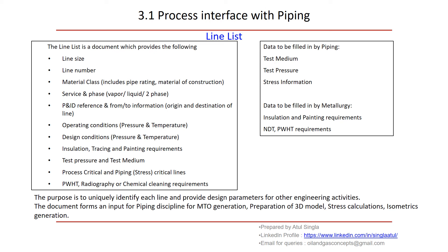Although the line list is a process document, some information is received from other disciplines. For example, test medium, test pressure, and stress information are given by piping, and process fills this into the line list. Data on installation, painting, PWHT requirements, and metallurgy-related items are given by the metallurgy department and become part of the line list. The line list uniquely identifies each line and provides design parameters for other engineering activities. It forms a unique input for piping discipline for MTO generation, preparation of 3D model, stress calculations, and isometric generation. By the time isometrics are generated at the latest stage of the project, all this information will be frozen and some items are also mentioned in the isometric — making this a very important document for piping design.